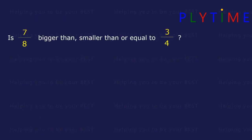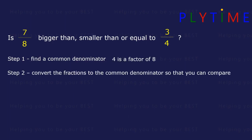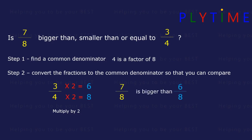Is seven eighths bigger than, smaller than, or equal to three quarters? Find a common denominator. Four is a factor of eight, so we can change our quarters to eighths. We convert to the common denominator so that we can compare them. So three quarters — eight divided by four is two, so we need to multiply the top and the bottom by two. That gives us six eighths. Now we can compare them: seven eighths is bigger than six eighths. So seven eighths is bigger than three quarters.